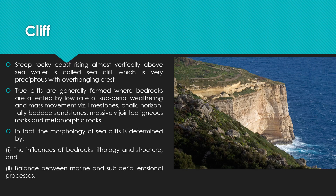Cliff. A steep rocky coast rising almost vertically above the seawater is called a sea cliff, which is very precipitous with an overhanging crest. Seawater forms a very steep rock surface that is very precipitous and extreme in steepness.